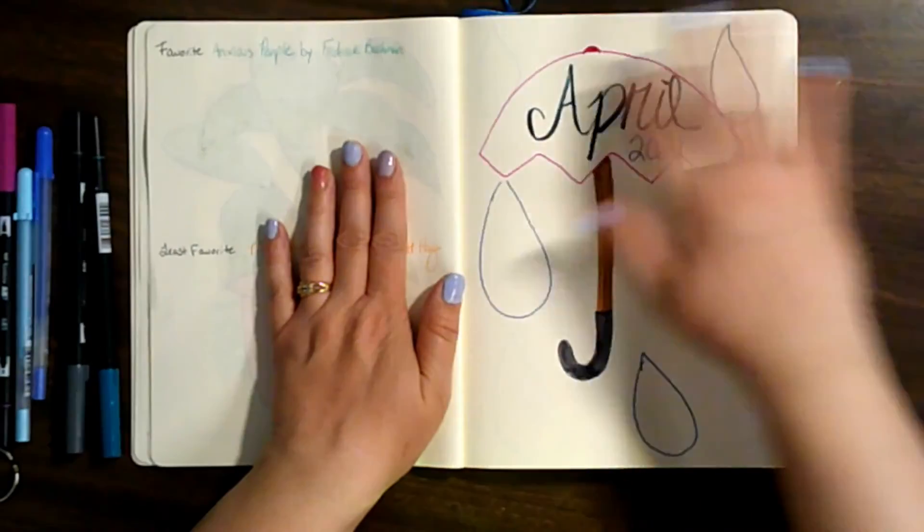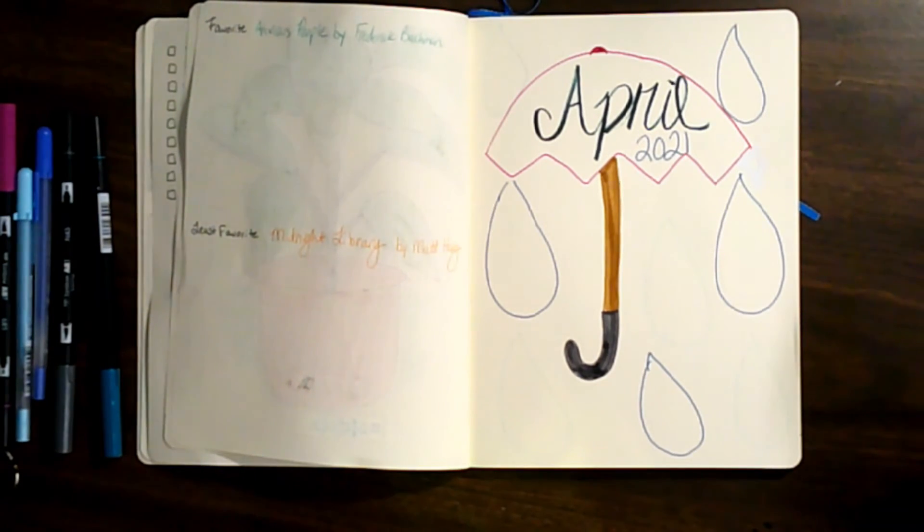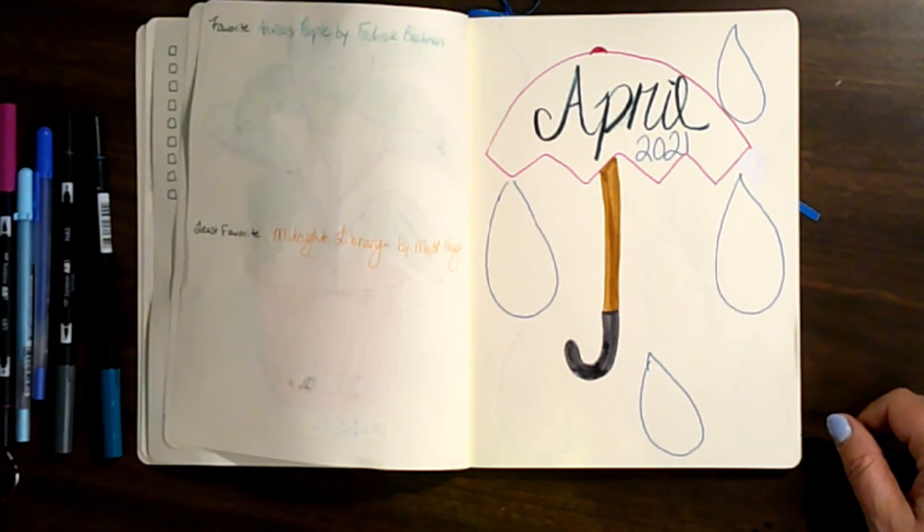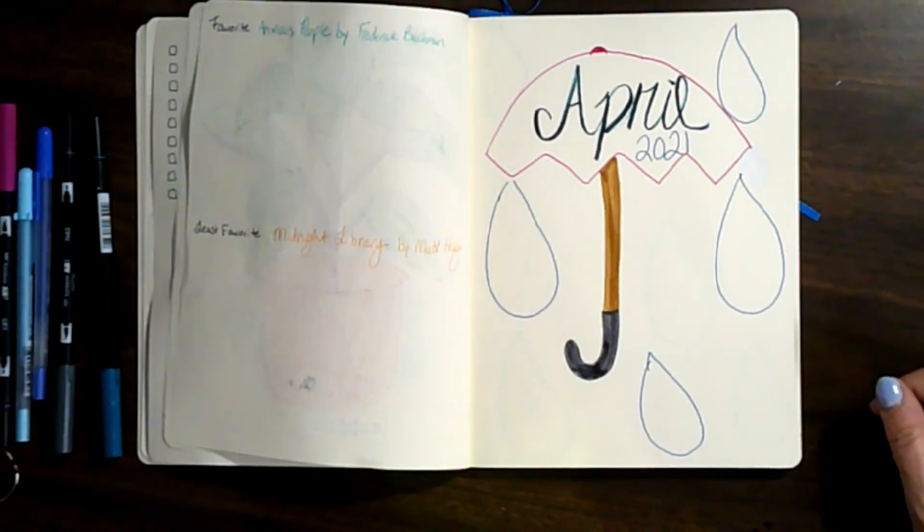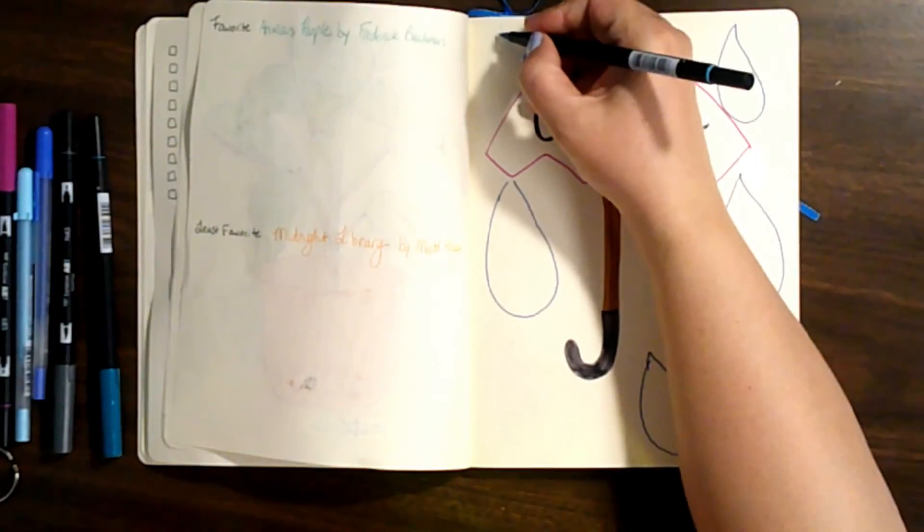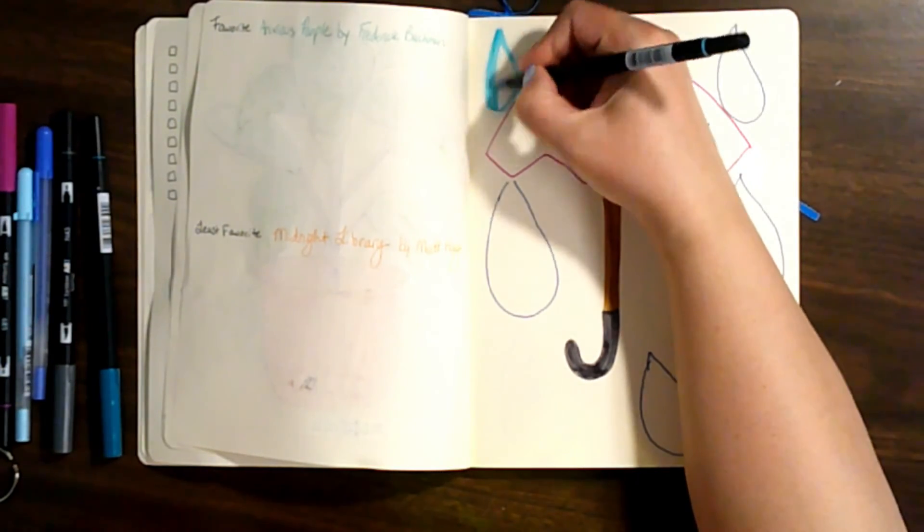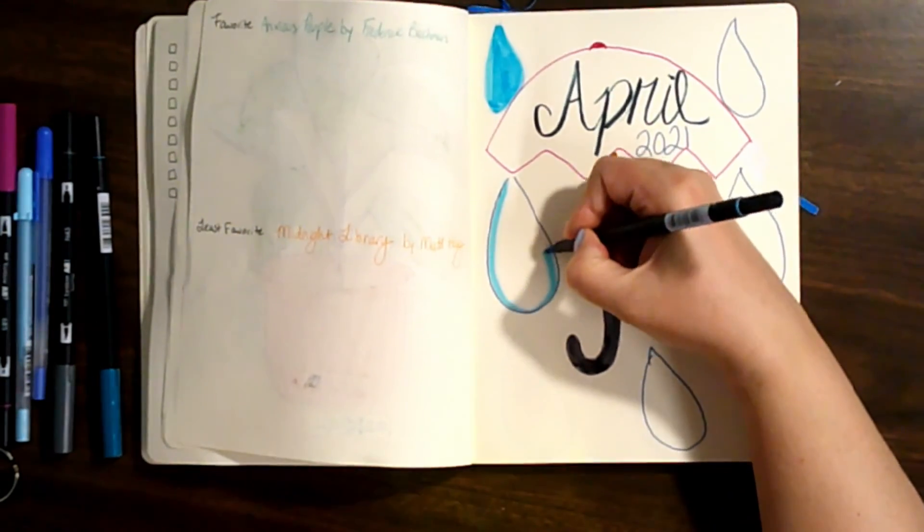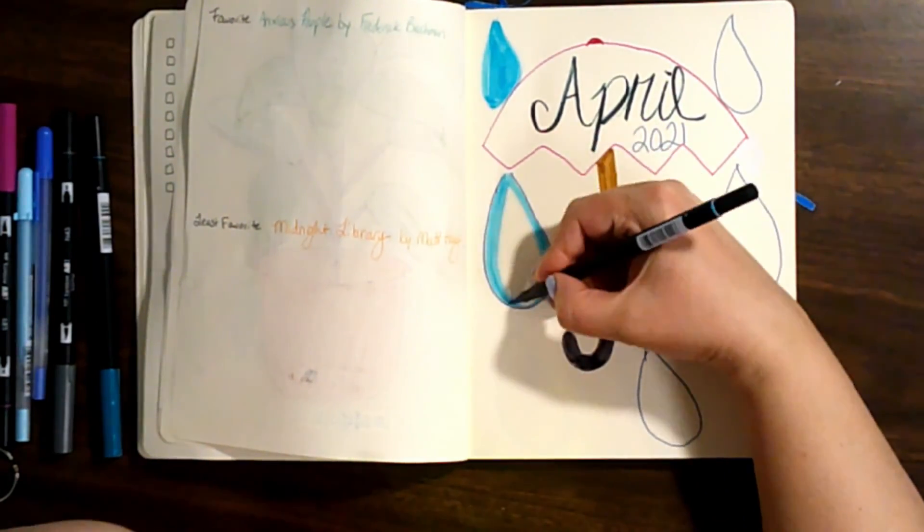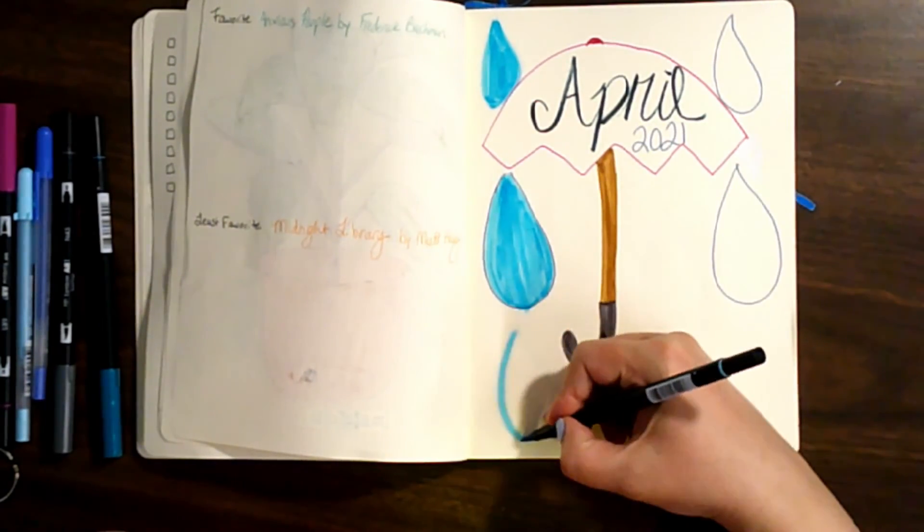I'm just going to write the titles of the books in here. I kind of want to color in the raindrops. I'm just going to give it a little bit more. Interesting. I got like a little bit less land.